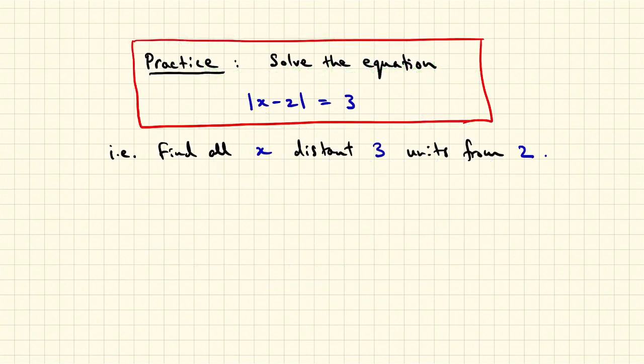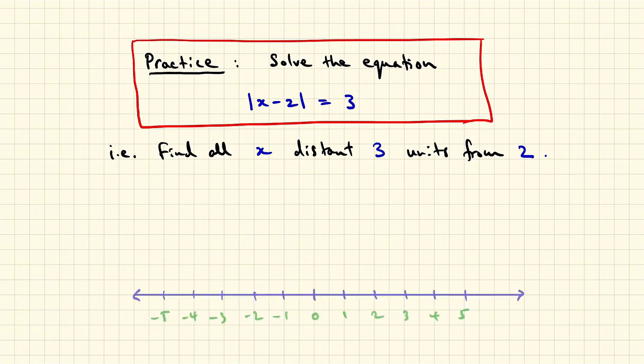All right, here's some practice for you. I want you to solve the following equation. That is, I want you to find all x distant exactly three units from two. Okay, so here's the solution. Let's draw the line and locate some points. In particular, let's locate the number two and look for all the points that are distant exactly three units from two.